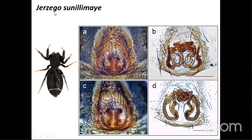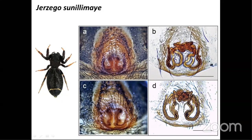Here is another example where intraspecific variations occur. Jatziella sunilimai was recently described from the Mumbai region. There are differences between the genitalia of two different specimens of the same species — some variations which may lead some to think these are two distinct species. However, there are some asymmetric characters visible from left to right side. But the ground plan remains the same in both specimens, and since we had males collected together we were able to identify them both as the same species.